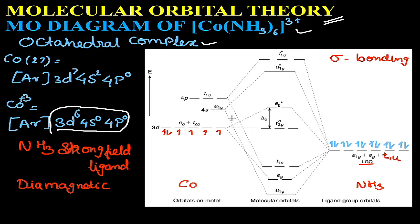The MO diagram can be drawn such that eg of metal combines with eg of the ligand, giving doubly degenerate bonding eg and antibonding eg*. Similarly, a1g of metal combines with a1g of ligand to give bonding a1g and antibonding a1g*. The t1u of metal combines with t1u of ligand to give bonding t1u and antibonding t1u*. The remaining t2g orbitals stay in a non-bonding state. We are considering only sigma bonding here.